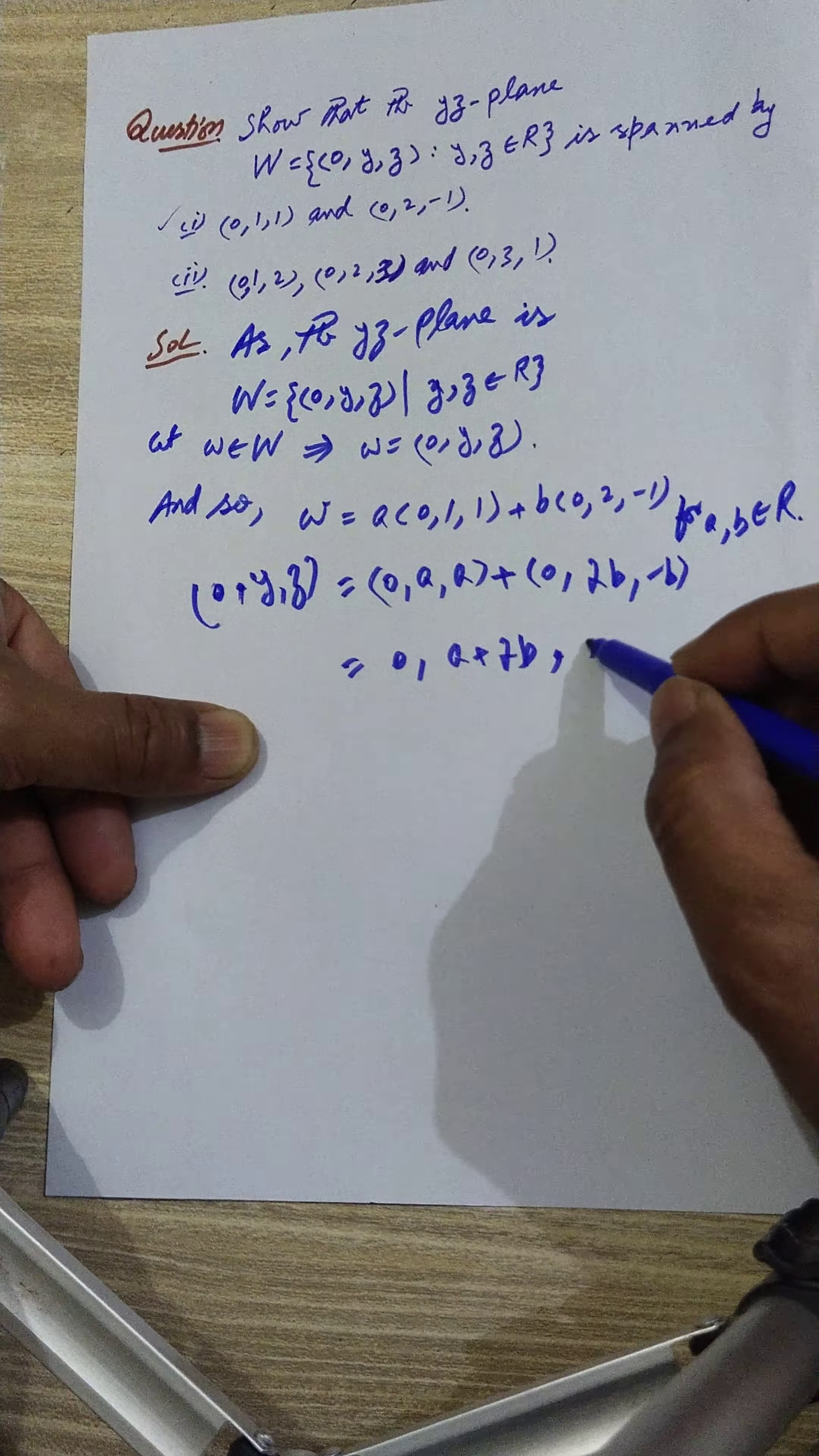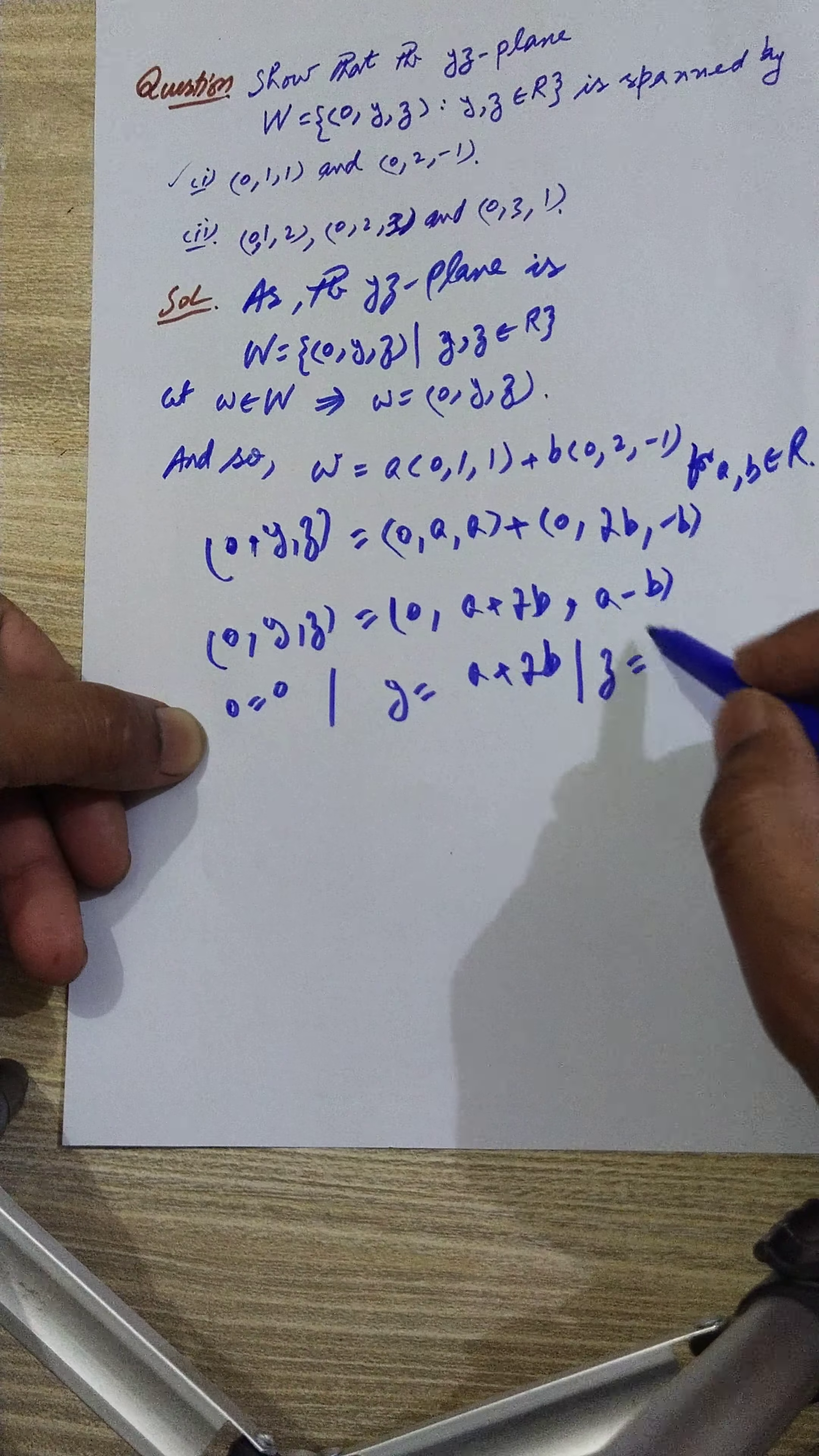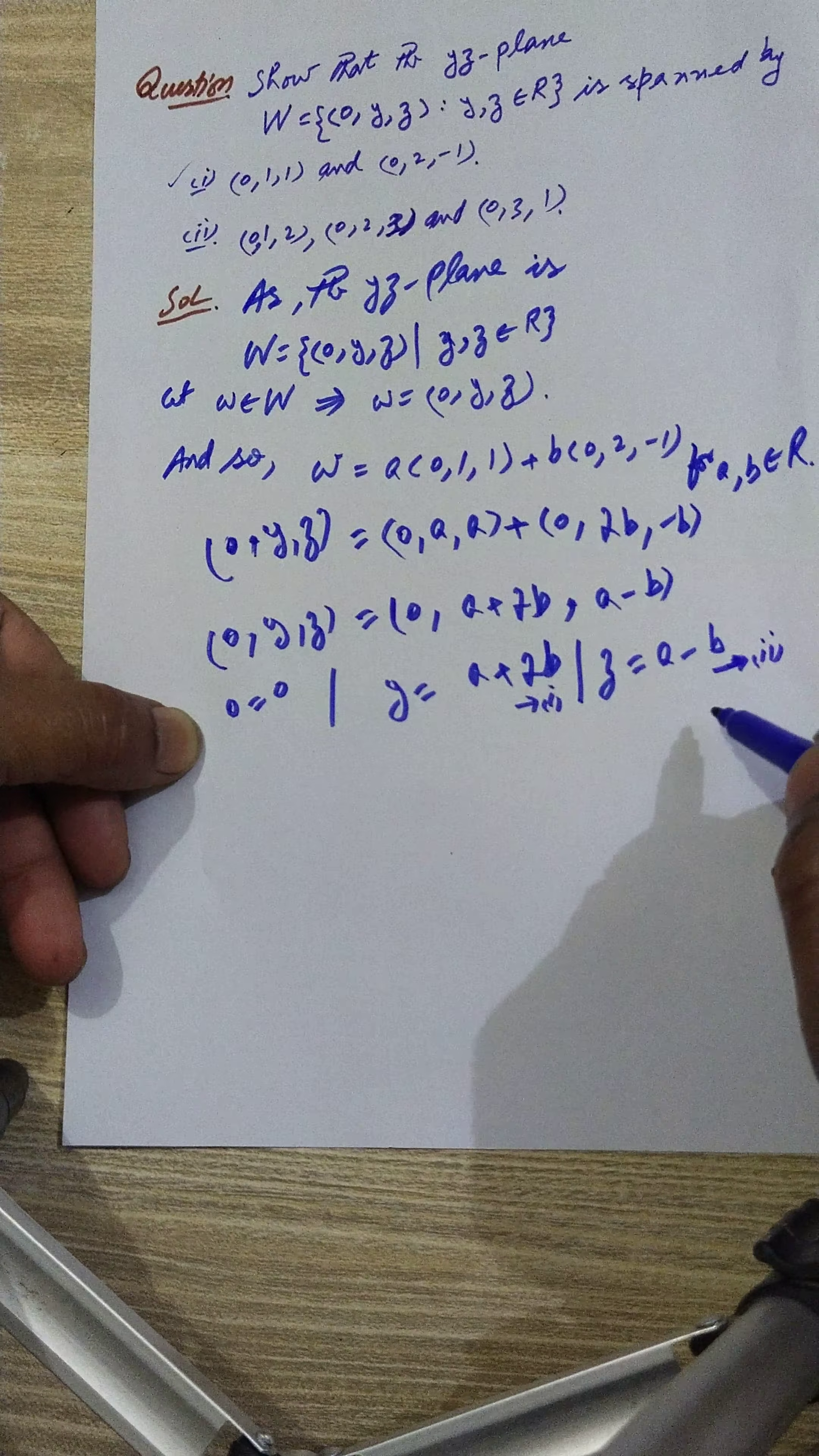0, y, and z. Now 0 is equal to 0, then y is equal to a plus 2b, and z is equal to a minus b. This is y and this is z. Let's call this number one and this number two.